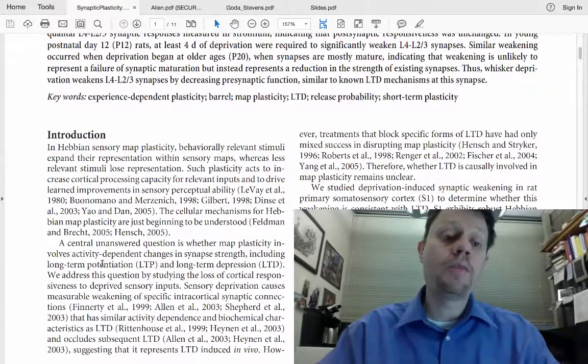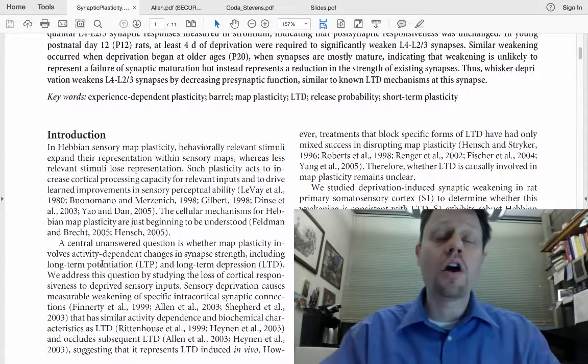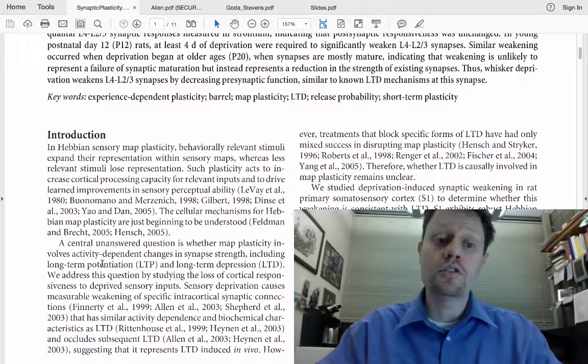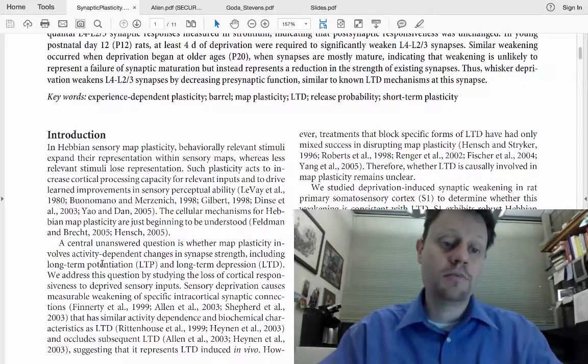In particular, questions like: are they weaker because there are fewer AMPA receptors, or are they weaker because there are fewer vesicles of neurotransmitter being released on average? That is, is it a postsynaptic or a presynaptic depression?